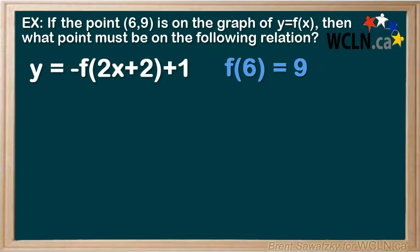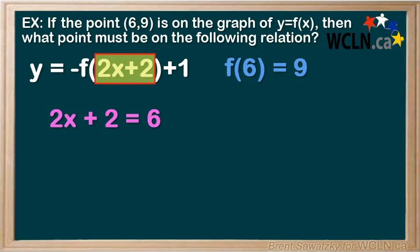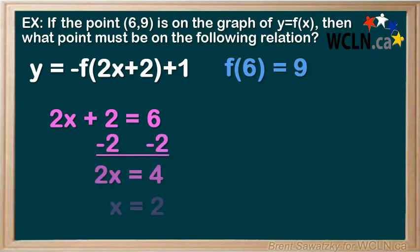How do we make an f in terms of 6 out of this? Well, we look in the brackets. And what does x have to be to get a 6 in these brackets here? You may be able to do it in your head, or we can easily make an equation out of this. We want 2x plus 2 to equal 6. So we can isolate the variable, and we see that x would have to be 2.